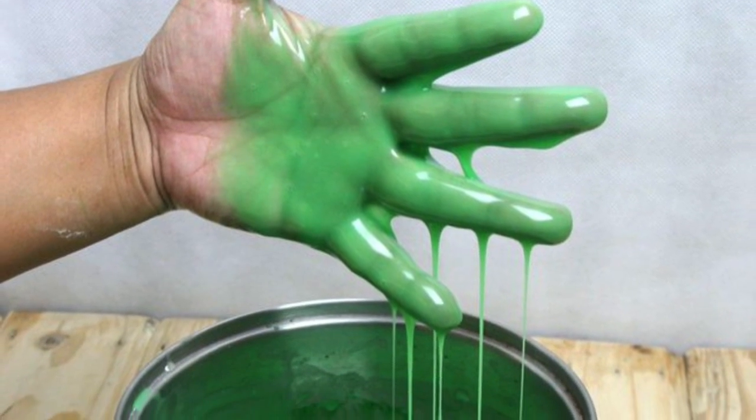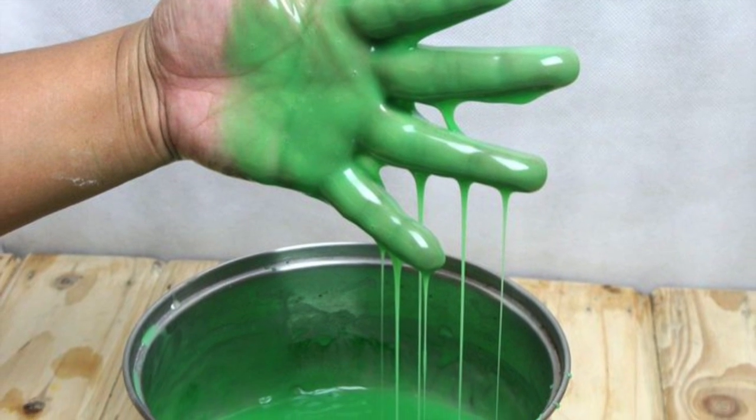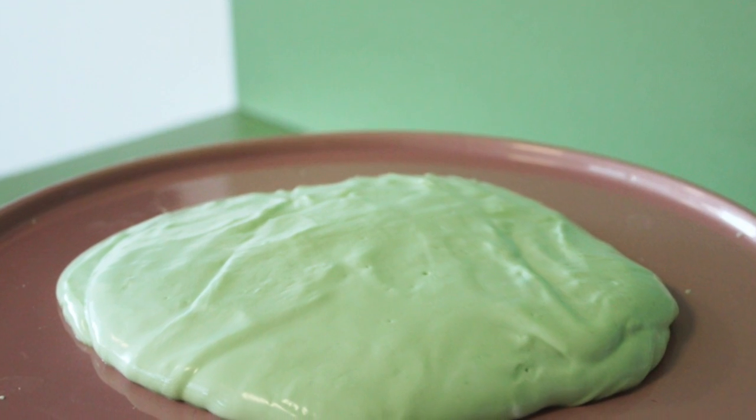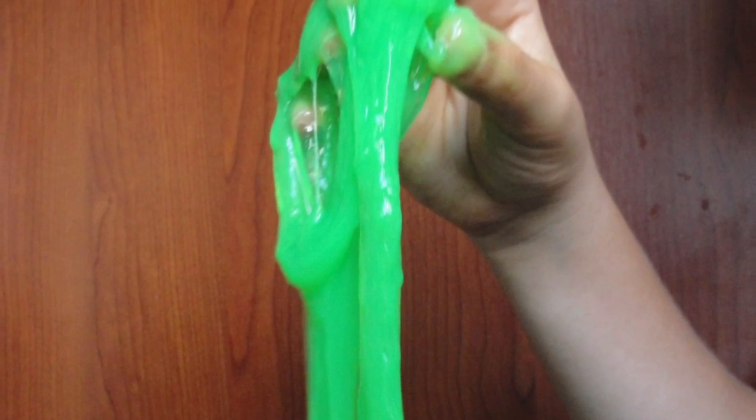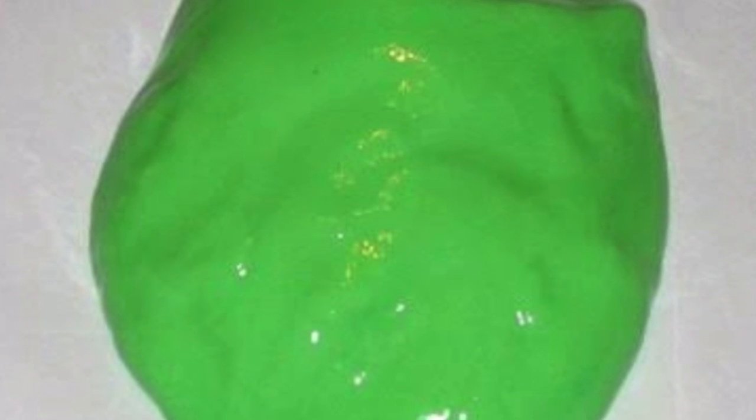Fill another cup with some liquid glue and mix it with water. Add your food coloring into the liquid glue and water mixture depending on what color you want your slime to be. Then mix the water and borax mixture and the water and liquid glue mixture together and let it sit for about one minute. And there you go, you've made your very own slime which will last forever.